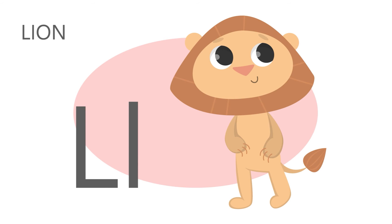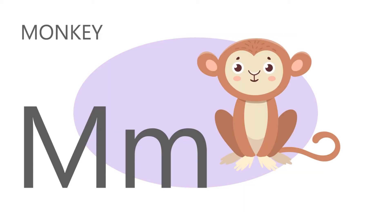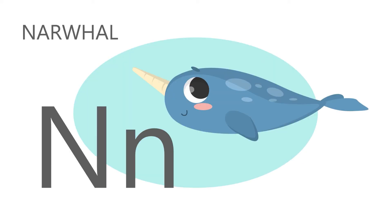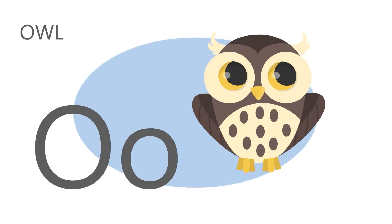L is for lion. L, l, lion. M is for monkey. M, m, monkey. N is for narwhal. O is for owl. U, u, owl.